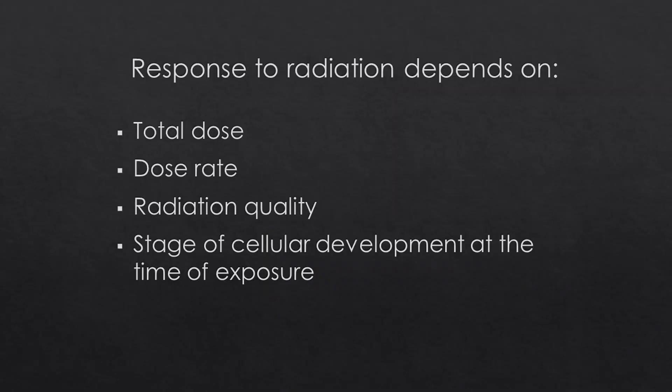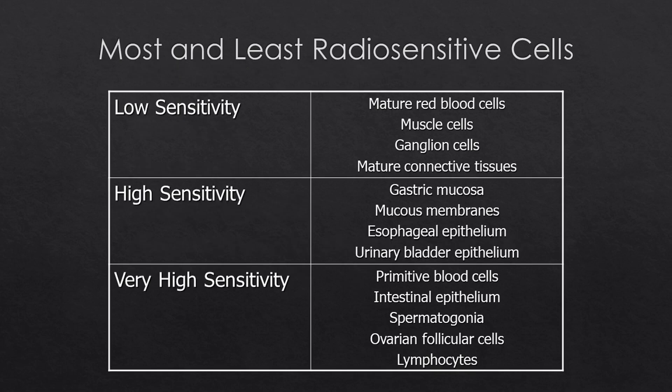Response to radiation depends on the total dose, the dose rate, radiation quality, and the stage of cellular development at the time of exposure. Low radiosensitivity cells include mature red blood cells, muscle cells, ganglion cells, and mature connective tissue. High sensitivity cells include gastric mucosa, mucus membranes, esophageal epithelium, and urinary bladder epithelium. Very high sensitivity cells include primitive blood cells, intestinal epithelium, spermatogonia, ovarian follicular cells, and lymphocytes.